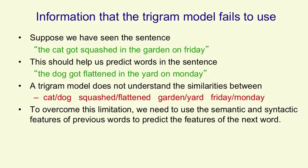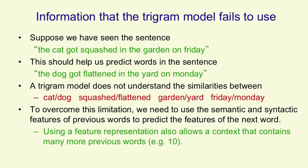To overcome this limitation, what we need to do is convert the words into a vector of semantic and syntactic features and use the features of previous words to predict the features of the next word. Using a feature representation allows us to use much bigger contexts that contain many more words, for example, ten previous words.